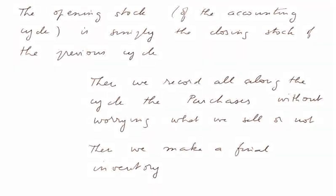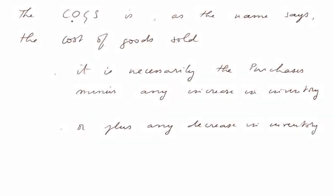Then, we record all along the cycle the purchases, without worrying what we sell or not. That's the traditional accounting procedure. And then we make a final inventory. And the COGS is, as the name says, the cost of goods actually sold. It is necessarily the purchases minus any increase in inventory or plus any decrease in inventory.